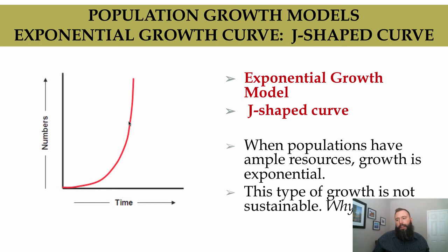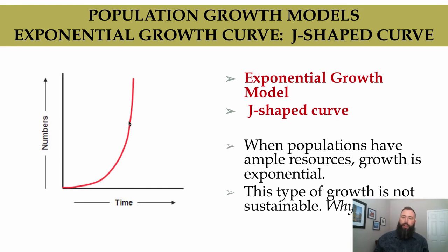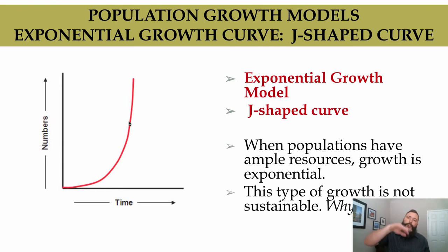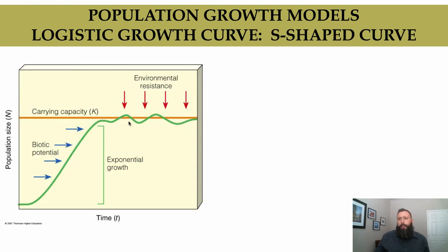The reason it's not sustainable is because those limiting resources are called limiting resources for a reason — resources are finite. Food, nutrients, space, habitat, partners — there's only so much of them. So over time, exponential growth will start to slow down. That gives us a different type of model: the logistic growth curve, or logistic growth model.